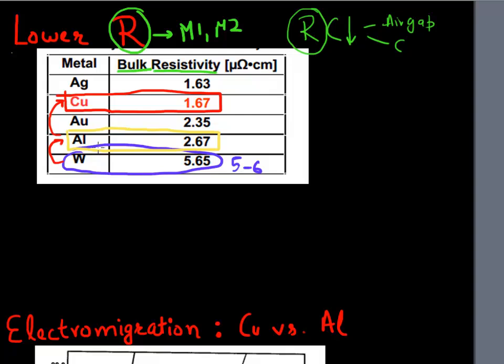Another advantage you get by using copper is that it has better immunity to electromigration.